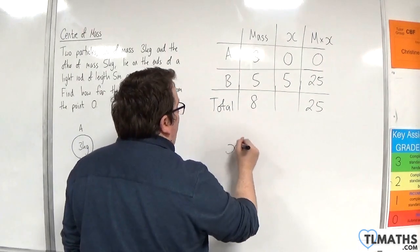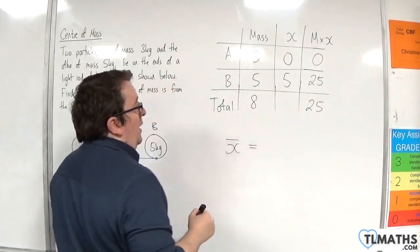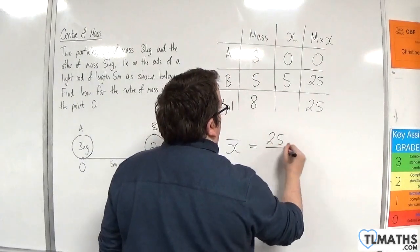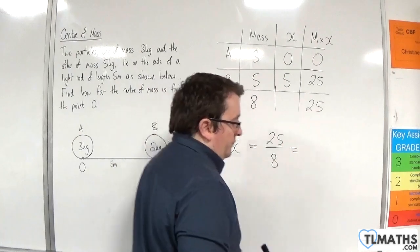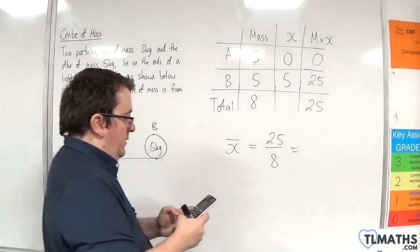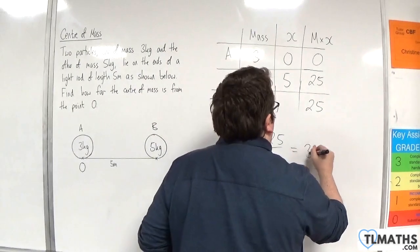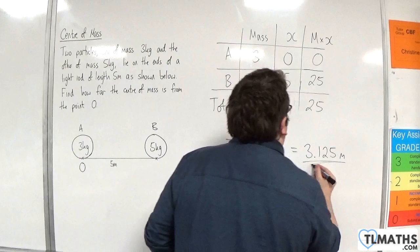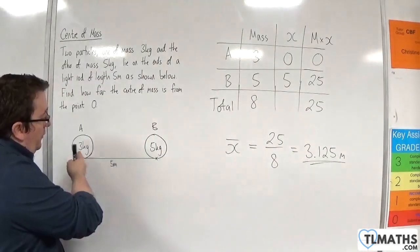So, the weighted average, which I'll call X bar, will be 25 divided by 8. So, 25 divided by 8 is 3.125. And so, it's 3.125 metres, that's where your centre of mass is.